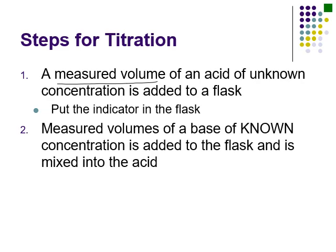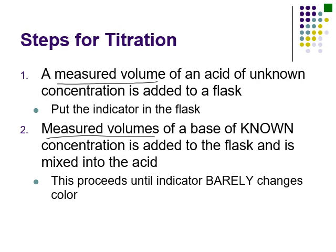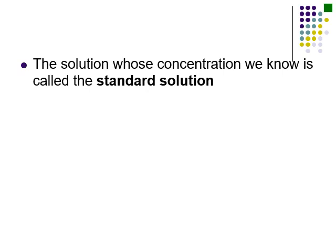Next, use a measured volume of a base of known concentration. The base tends to be placed in a device called a burette, which allows dispensing very specific amounts. That gives us the measured volume of our base. We add it to the flask, mixing it into the acid, until we reach the equivalence point — equal moles of acid and base. The solution whose concentration we know is called the standard solution.